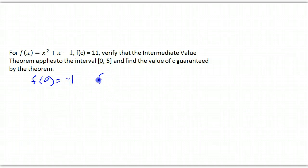Now, let's check out what f of a is, negative 1, and what f of b is. So, f of 5 is 25 plus 5 minus 1, which is 29, and notice that our k, 11, is between negative 1 and 29.